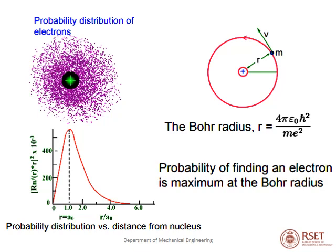If we consider a fixed circular orbit, with mass of the electron m, velocity v, and r as the Bohr radius, the equation to find the Bohr radius is: r = (4π ε₀ ℏ²) / (m e²), where m is the mass of the electron, e is the electron charge, and ℏ = h / 2π where h is Planck's constant. From the graph, at a certain distance from the nucleus, the probability of finding the electron is maximum.